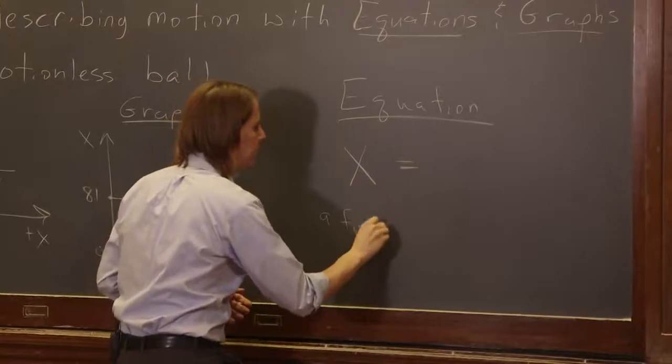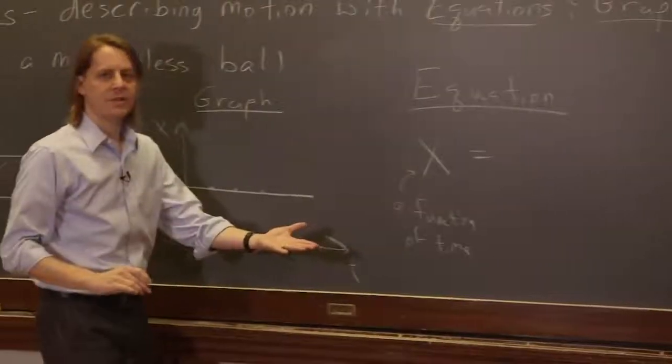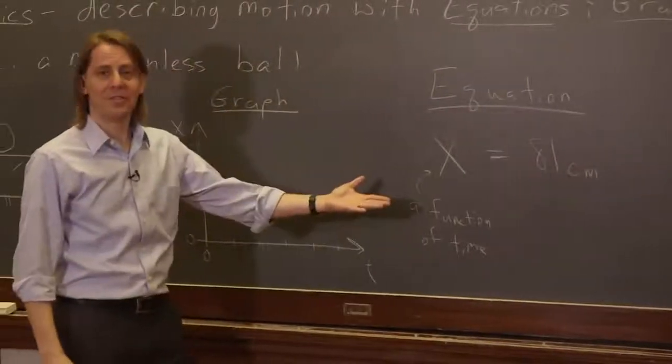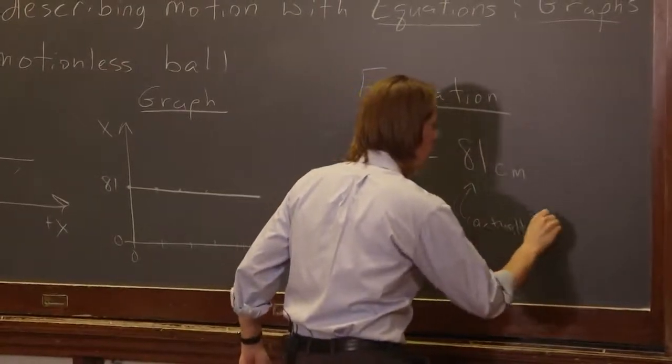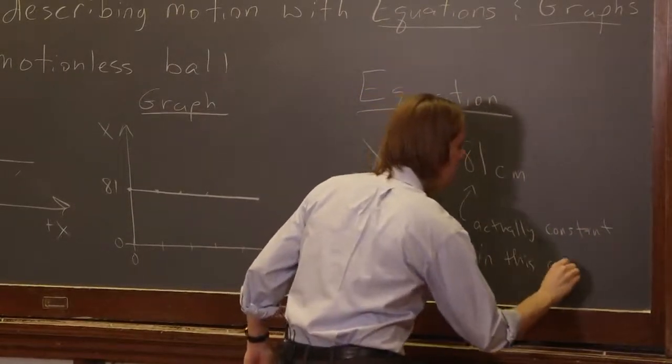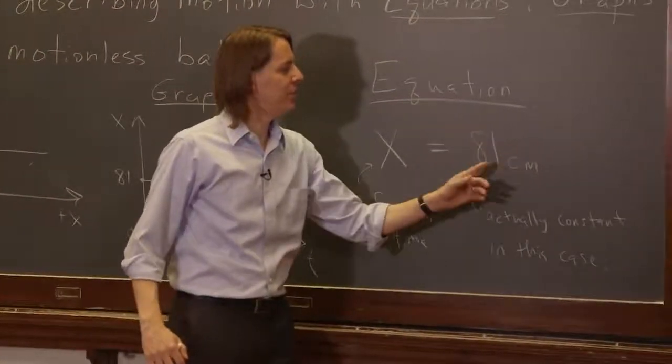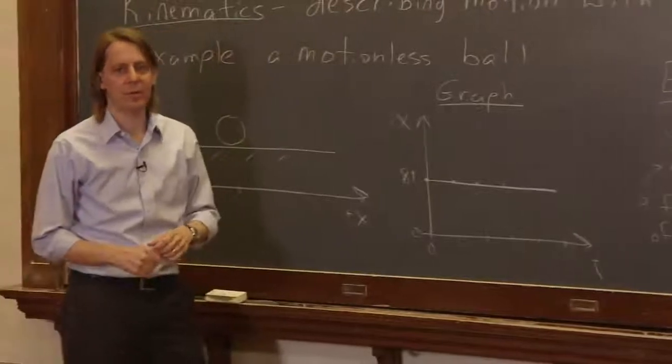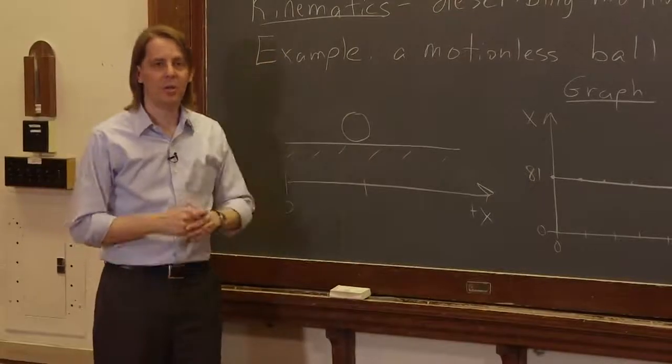So let's see. A function of time. And in this case, what is it? It's 81 centimeters. But in this case, it's constant. Nothing is changing in time. So actually, actually constant this time. In this case. So as we get into more complicated kinematics, this side would have had some numbers and symbols and would have had t for time in it because it would change with time. In this case, since it's constant, it's just x equals 81 centimeters. So that is your first example of describing motion, a fairly simple motion, with equations and graphs.